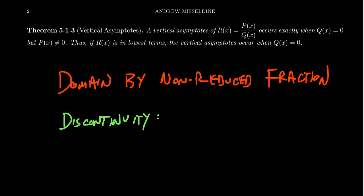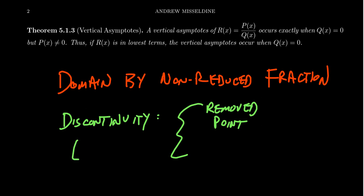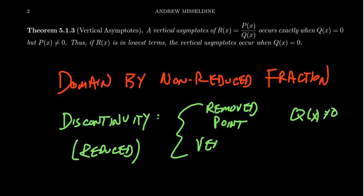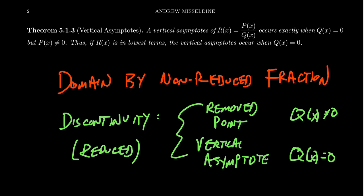There are two types of discontinuities. The first is a removed point, which occurs when you do have a reduced fraction. With a removed point, the discontinuity disappears in reduced form — Q(x) is no longer zero after simplification. On the other hand, you get a vertical asymptote when, in reduced form, the denominator is still zero. Let me explain via some examples, because sometimes it's better to explain things with examples.